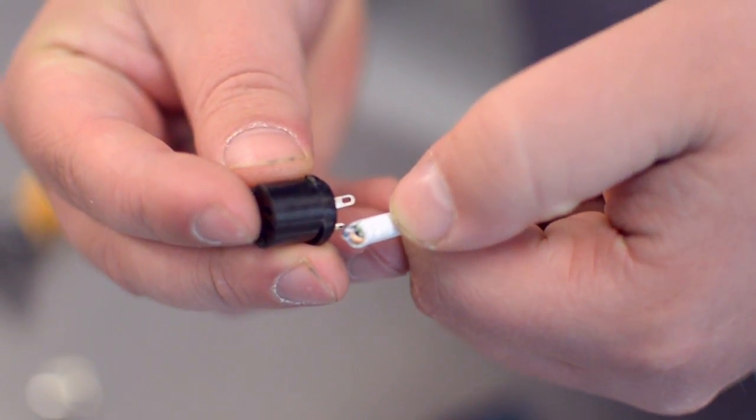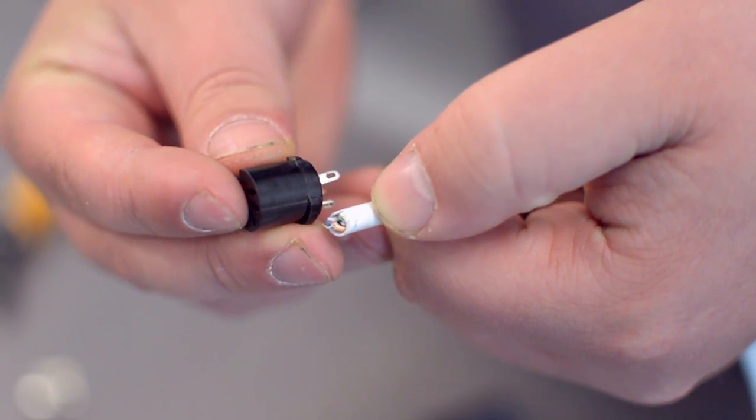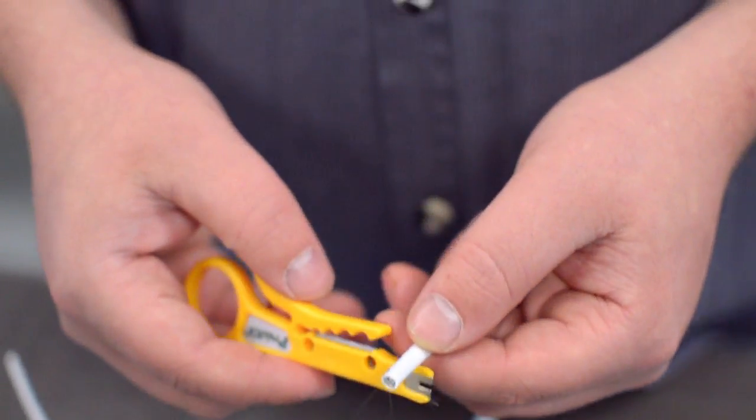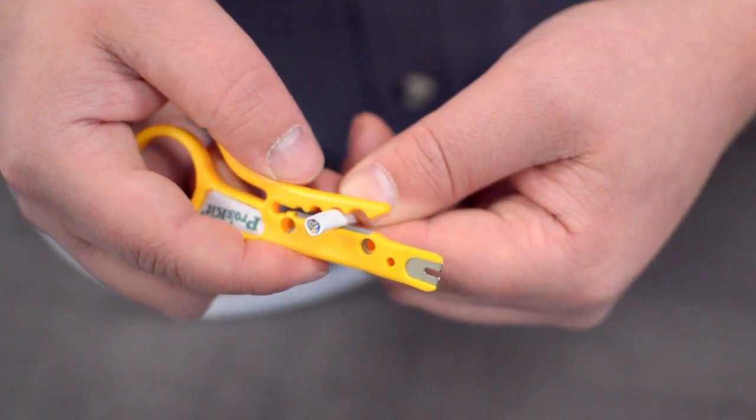Measure how far you will need to strip back the jacket by holding the cable up against the base of the connector. Then, strip the cable jacket using the wire strippers.